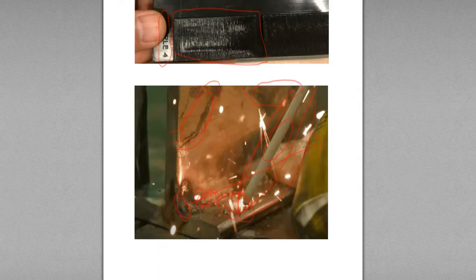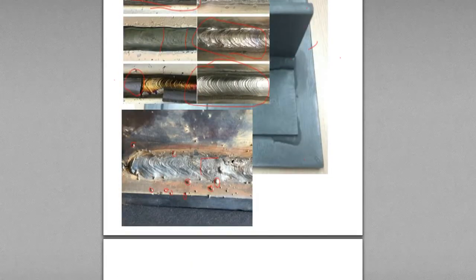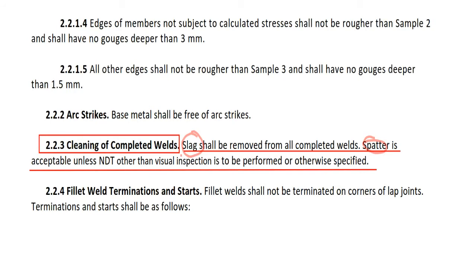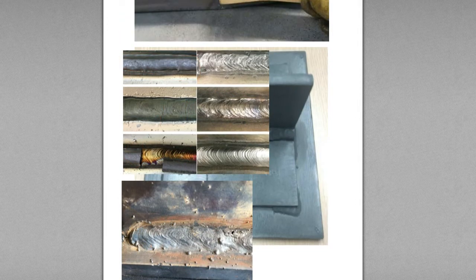When you weld with SMAW and some other welding processes, usually SMAW, this fire — a small piece of fire becomes this kind of spatter. Spatter is acceptable if an entity other than visual inspection is to be performed or otherwise specified. So if other than visual inspection is performed, this spatter is not acceptable. But if only visual inspection is performed, this spatter is acceptable.